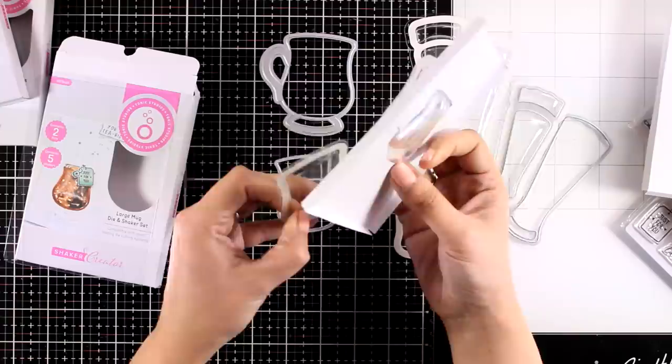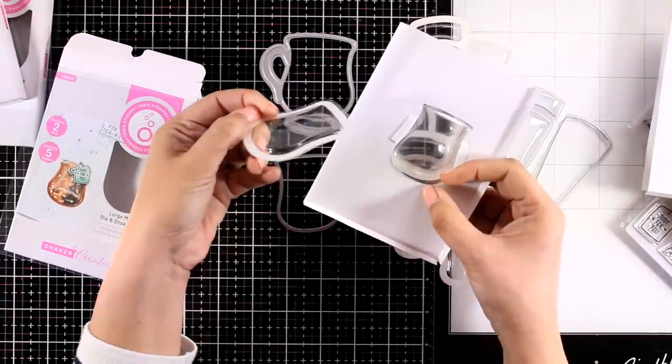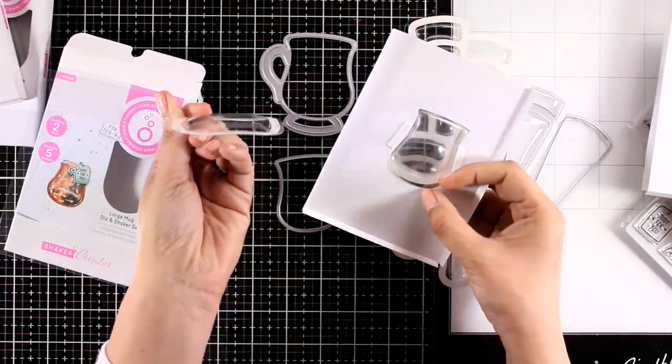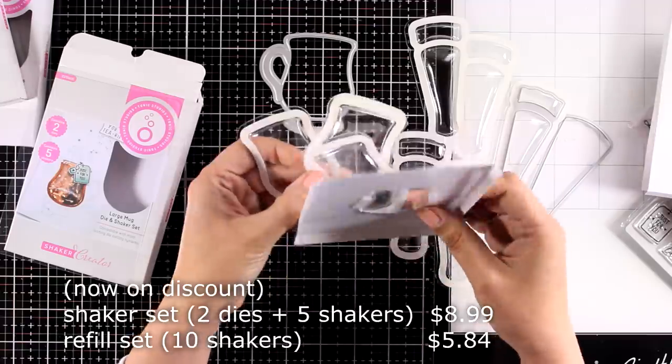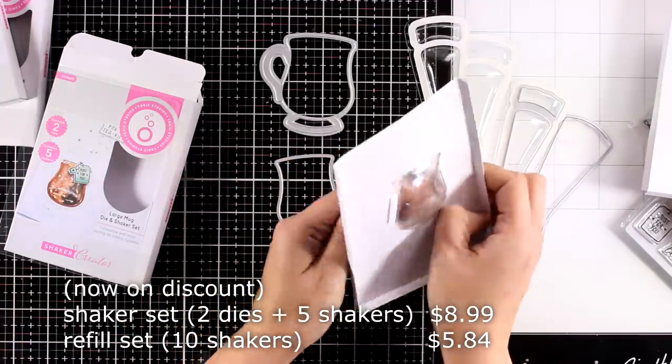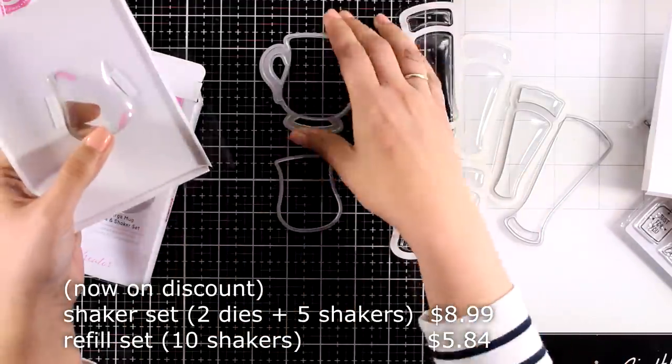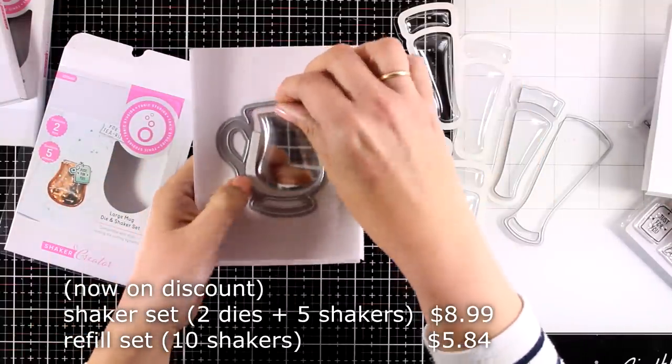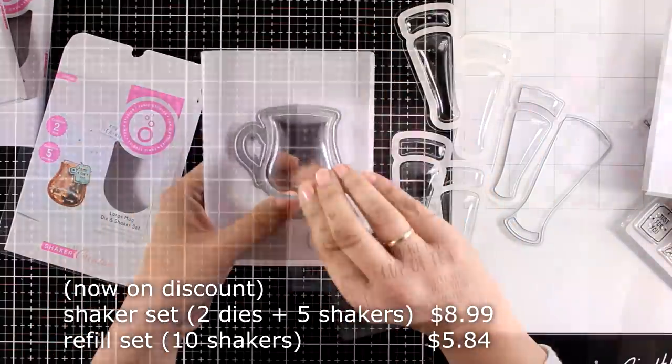Of course you can use acetate for your windows when you use up all your pouches and of course there is the option to get refills of these pouches that match your dies so they are available and I think on those refill packages you get 10 of the pouches for about $5.